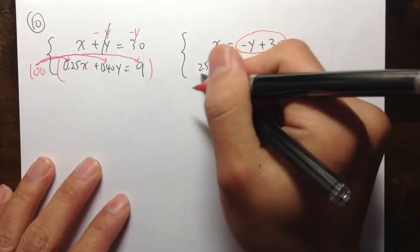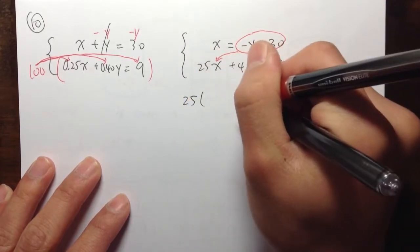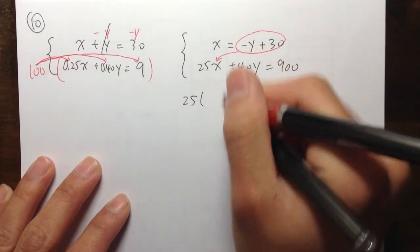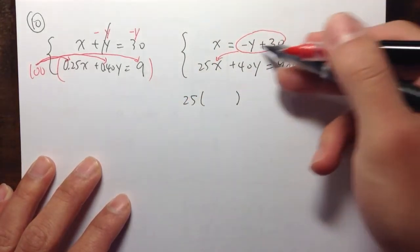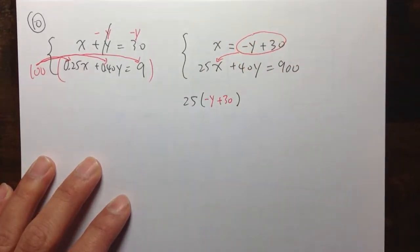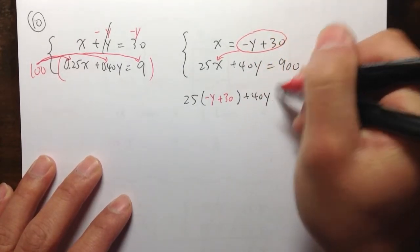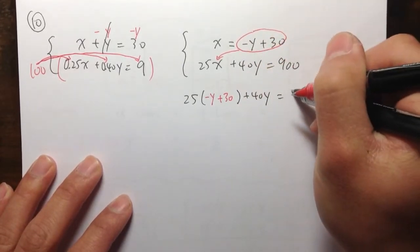And so, instead of 25x, we can write this as 25, and then with the parentheses, the x becomes this, negative y plus 30. And then, we still have the rest, plus 40y, that's equal to 900.